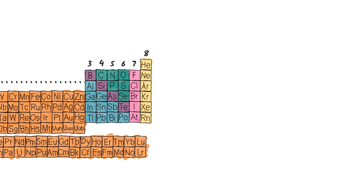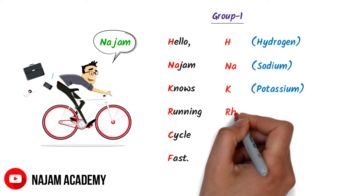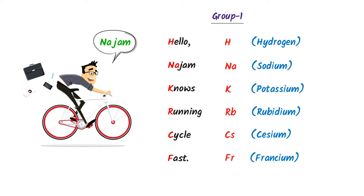Now consider Mr. Najam cycling fast. I say: Najam knows running cycle fast. Here, H stands for Hydrogen, Na stands for Sodium, K stands for Potassium, R stands for Rubidium, C stands for Caesium, F stands for Francium. Thus this is the first group of the periodic table.